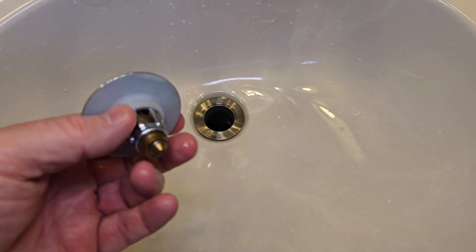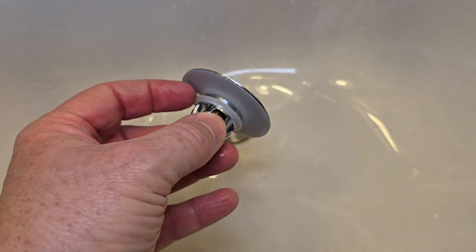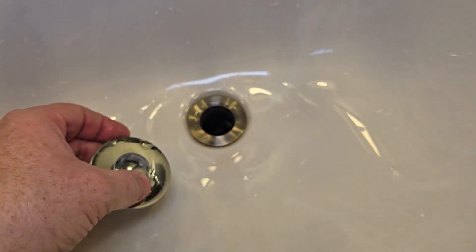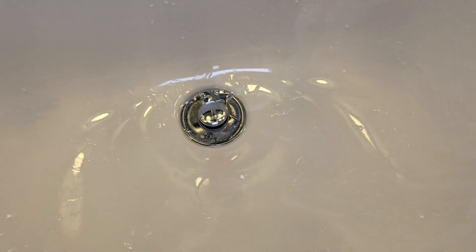Now, this other one is an actual sink stopper. You've got different O-rings you can put on here for different size drains, but you're going to set it on there. It's just going to sit there.